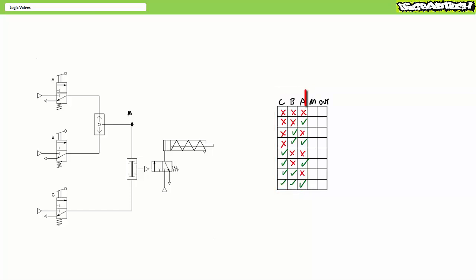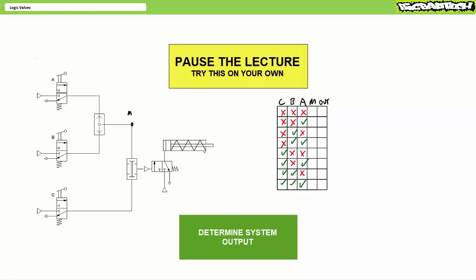To make matters easier, I've also included an intermediary output of just the OR valve as a pilot signal M which would be A or B. Using your understanding of AND and OR valves, can you fill out the rest of this table? By all means, pause the lecture and try this on your own.